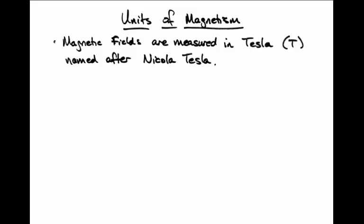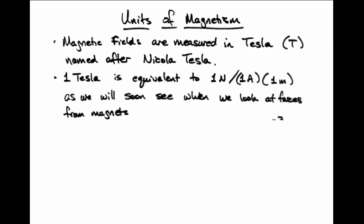The units for magnetism are the Tesla in the MKS system, named after physicist Nikola Tesla. In the MKS system, one Tesla is equivalent to one Newton per one amp per one meter. We'll see the origin of this combined unit when we look at forces from magnets in a short while.